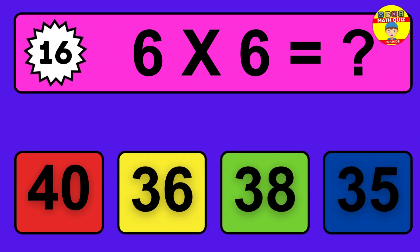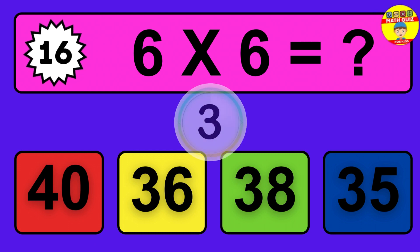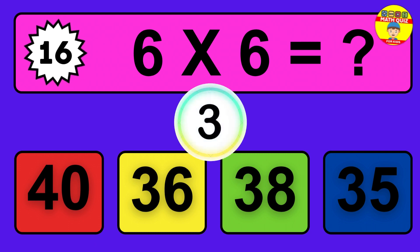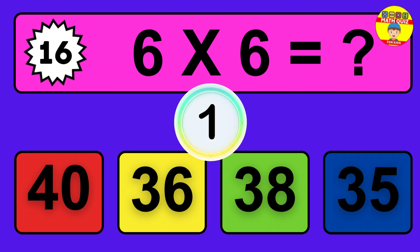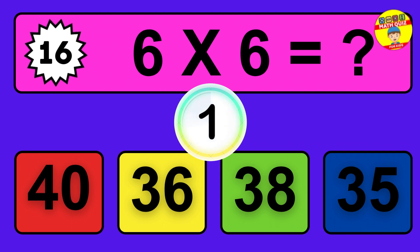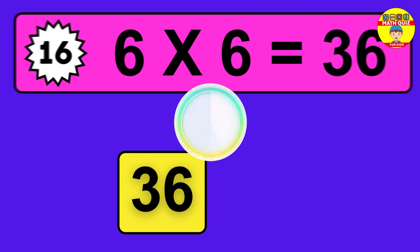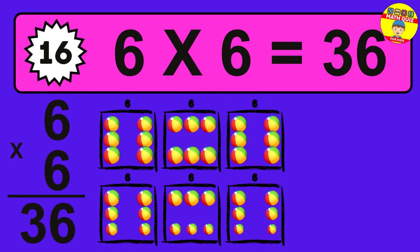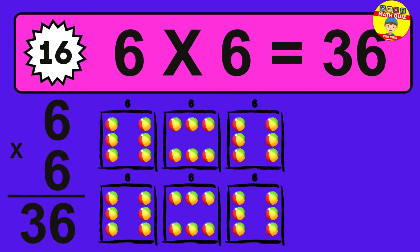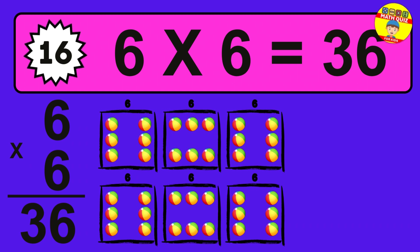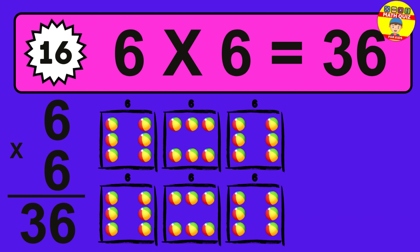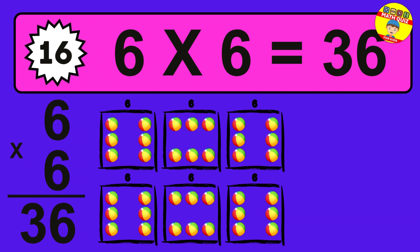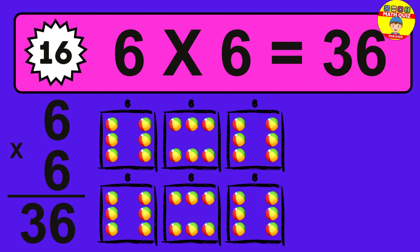Question 16. 6 times 6 equals what? The answer is 6 times 6 is 36. To calculate, we have 6 groups with 6 balls each one. So how many balls do we have? 36 balls.